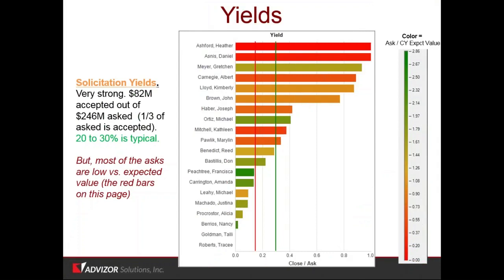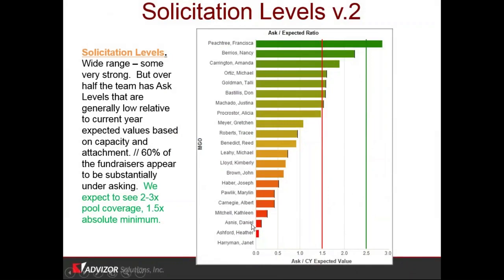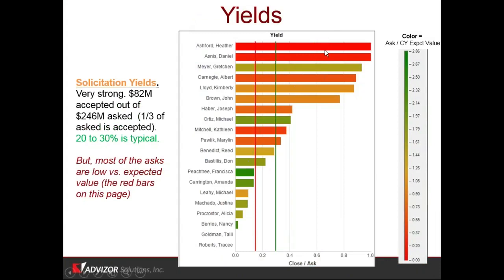Another way to look at that is the bar chart — looking at field officers from the highest coverage ratio, which is taking the solicitation totals for her pool and dividing by the expected amount. Francesca's got a ratio of about 3, which is why she's green — that's good. Daniel Asnes is down about 0.2, which is bad. Michael Ortiz is up at 1.6. Nancy Berrios is up at about 2. So you've got some people asking very effectively and about two-thirds of your pool appears to be under-asking. Generally we like to see a band of ratios from 1.5 to 2.5. This is coaching tips for the people down here. Heather and Daniel are closing at close to 100% — but they're bright red. Their solicitation levels are just low. These go together and need to be managed together because they're leaving a ton of money on the table.